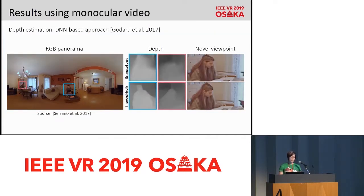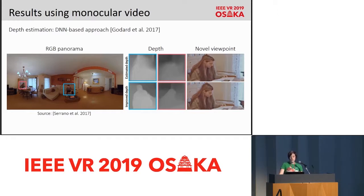We have also tested our method for the case of capture systems that do not provide depth maps. This is particularly important because monocular 360 cameras are more affordable than sophisticated camera rigs. Here you can see an example extracted from a dataset of a previous work that did not provide depth maps. For this case, we used the approach proposed by Godard et al. to estimate per-frame depth maps from monocular RGB. However, the estimated depth is not of sufficient quality for our purposes and also lacks temporal consistency. Our depth improvement stage significantly increases the quality of the final depth, including temporal coherence, enabling motion parallax even from such a limited input.